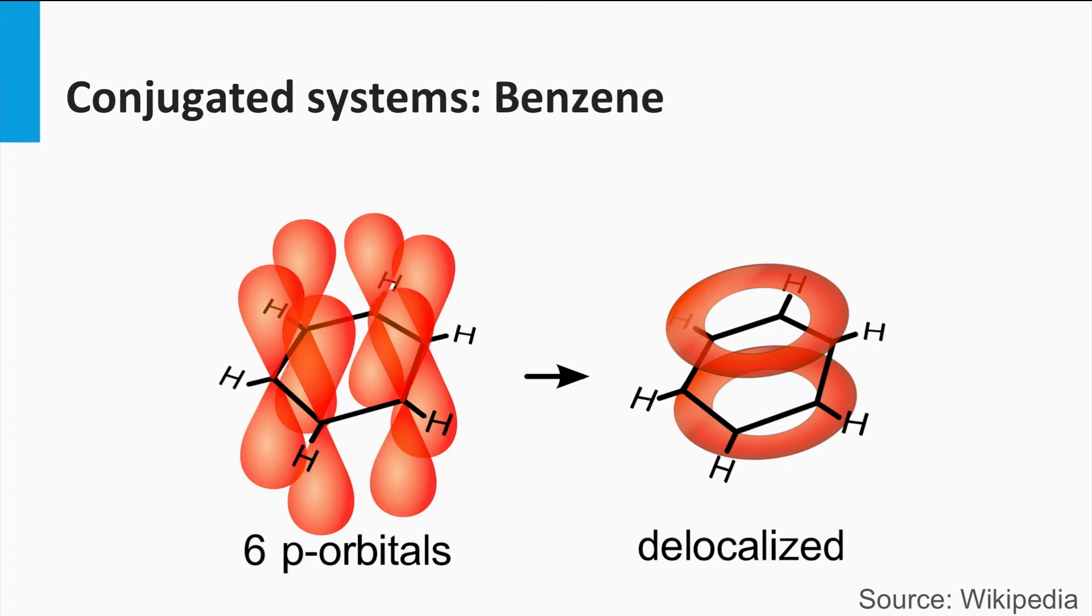These p orbitals in the conjugated system are delocalized. This means that they can form one big mixed orbital. The valence electron of the original p orbital is shared over all the orbitals. Here you see the example of the benzene ring.